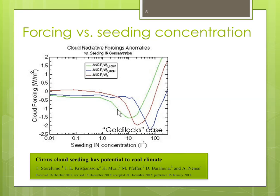Then there's a range of concentrations that is just right. When you get it just right, you suppress homogeneous nucleation and form cirrus clouds that consist of few but large ice crystals, producing strong cooling because you're reducing the greenhouse effect of the cirrus clouds. Then, when you get to high concentrations of ice nuclei, you enter an over-seeding regime where you're actually warming the climate instead of achieving the intentional cooling.